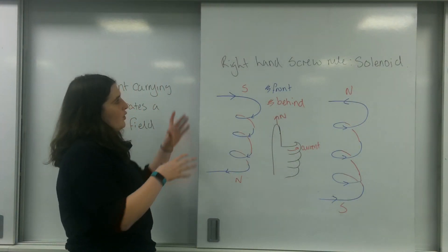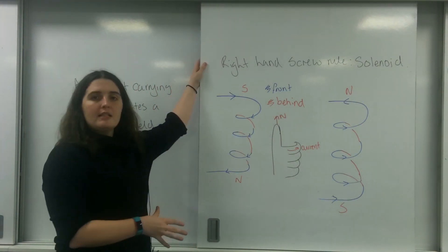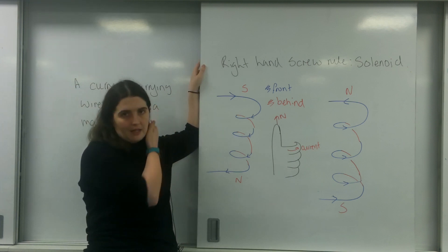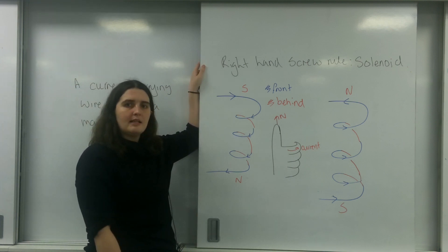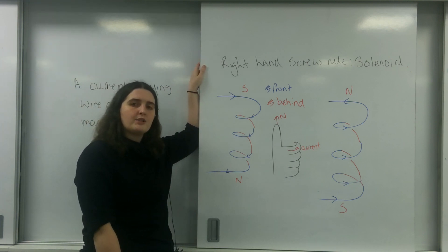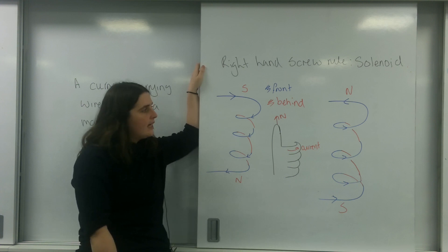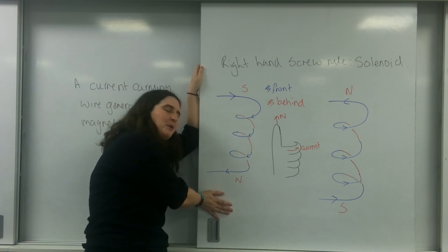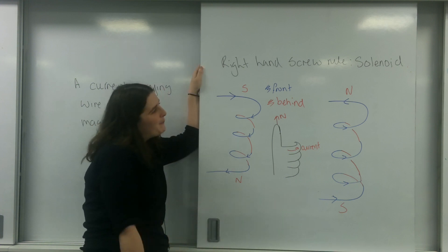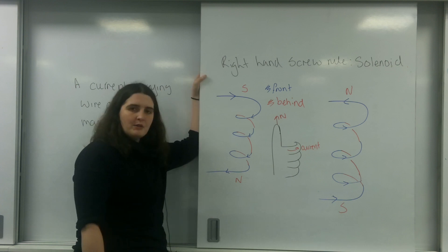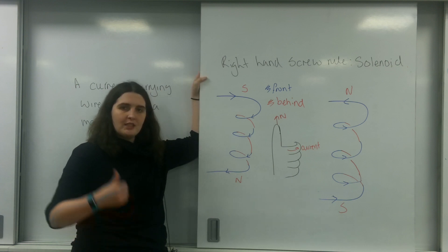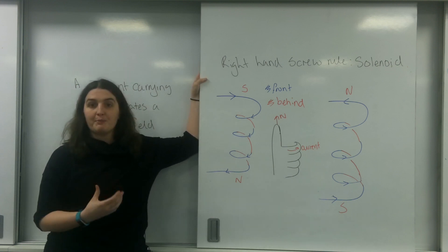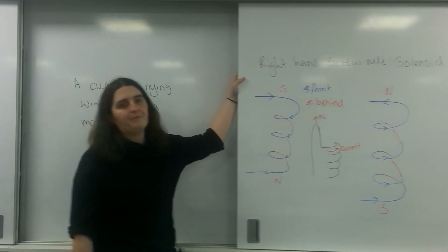This idea of the solenoid is really useful when we start talking about magnetic flux and transformers, because this is how a transformer works — all those coils of wire. Now I'm going to use the right-hand screw rule to explain what happens with two wires.